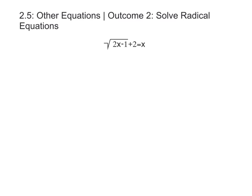In this video we're looking at section 2.5 in your textbook, outcome number two: solving radical equations. The first step in solving radical equations is to isolate the radical to one side of the equation by moving everything else to the other side.